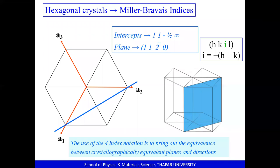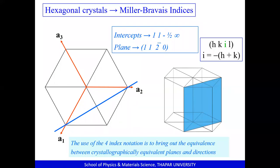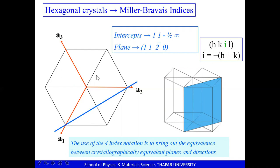In the last class we were discussing a particular example where a plane shaded in blue color in the hexagonal unit cell was shown, and the problem was to identify the hkil or Miller-Bravais notation for that given plane. For a hexagonal unit cell, you first define four corresponding axes. Three of them lie in the basal plane, as shown separately on the left-hand image.